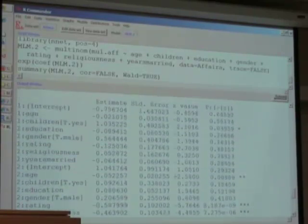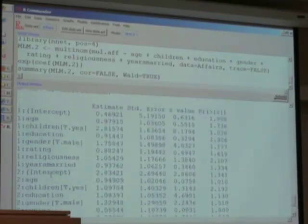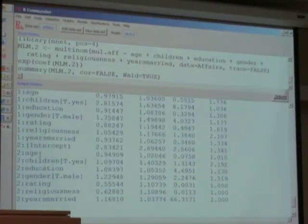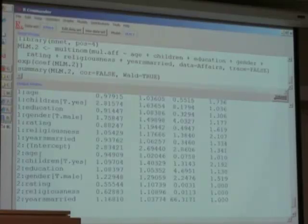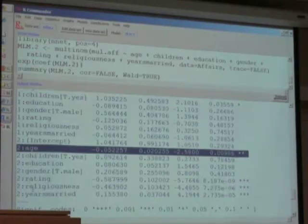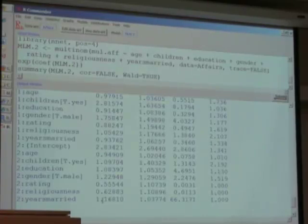The other statistically significant coefficient in the model is age, which is not significant for having one affair, but it suggests that you are more likely to have 2 or more affairs, and the odds are actually less likely. The odds are 6% lower with every additional increase in your age. Also, significant is the rating of religiousness and years married, which suggests that you are 16% more likely to have an affair for each additional year of your marriage.